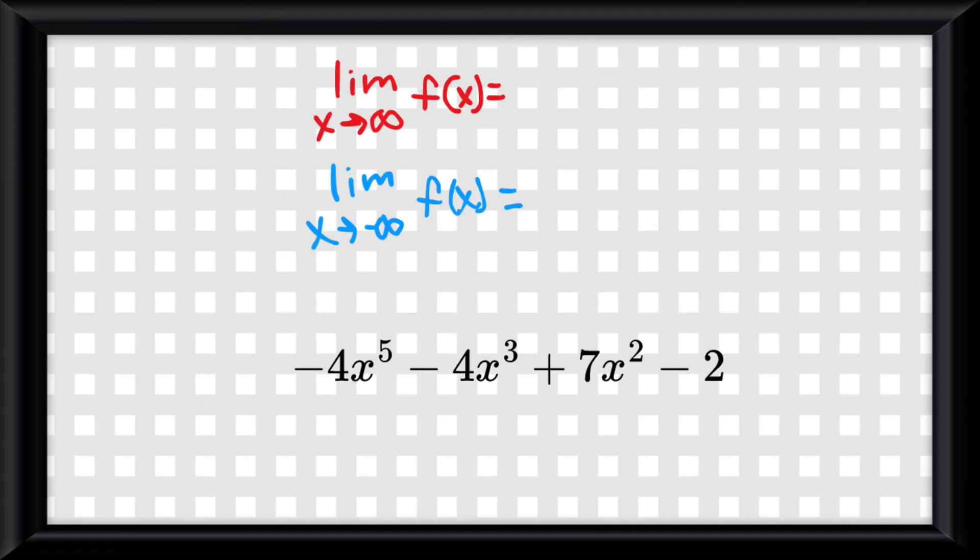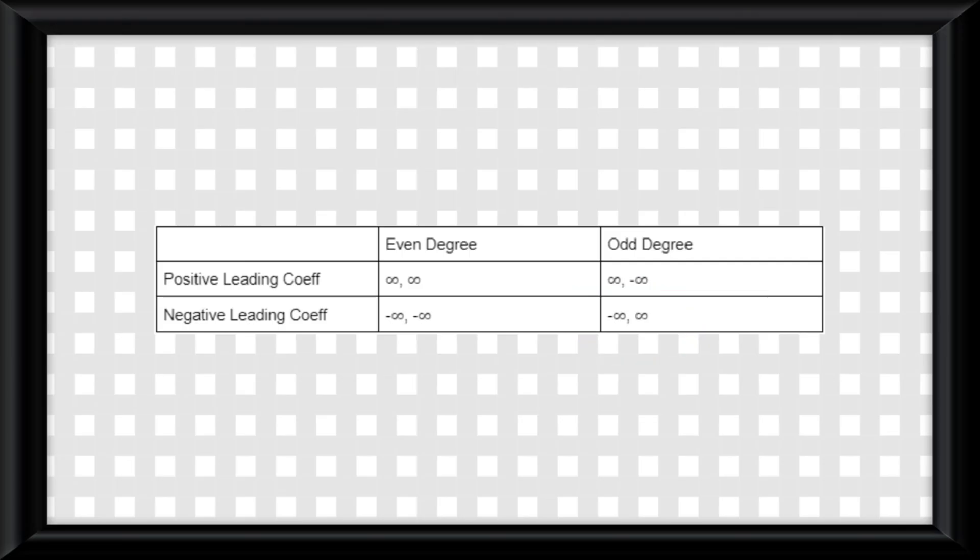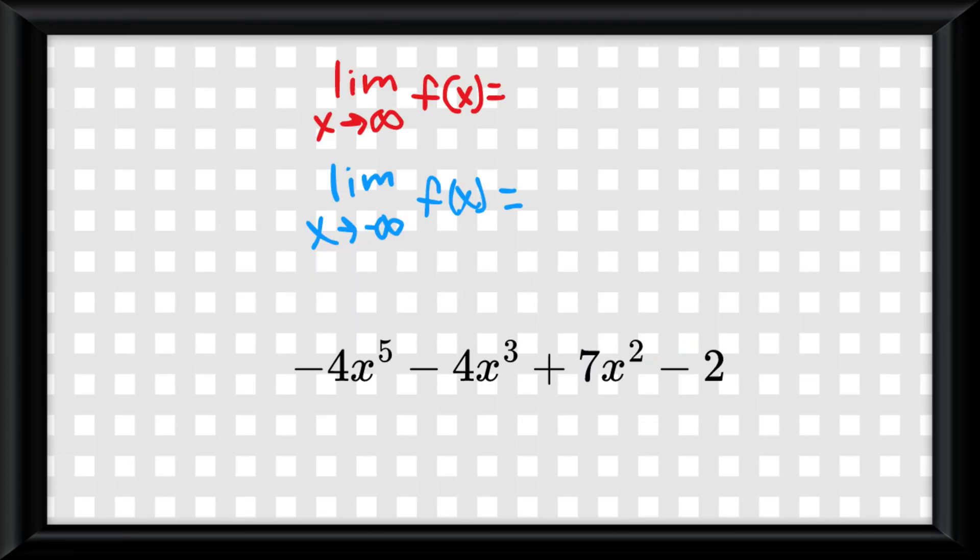For example, in this equation the degree is odd, but the leading coefficient is negative. Referencing the table, I just plug in the y values from it so my answers would be the limit as x approaches positive infinity of f of x would equal negative infinity, and the limit as x approaches negative infinity of f of x would equal positive infinity.